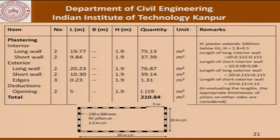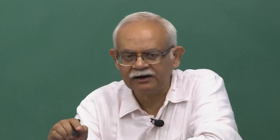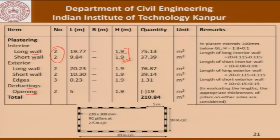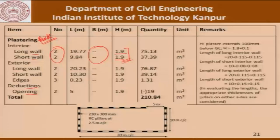For plastering, the long wall and short wall lengths are taken, deductions made for the 5 m opening, and the height is taken as 1.9 m (1.8 m above ground plus 100 mm below ground level on both sides). Note that in plastering there is no breadth — the thickness is specified in the item description. The total plastering for this boundary wall measuring 20 m by 10 m with a 5 m opening, 1.8 m high, comes to 210.84 square meters.